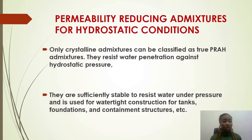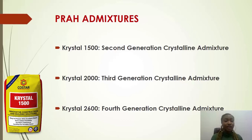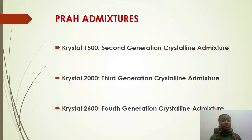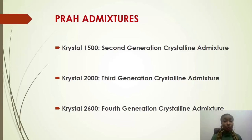Anywhere that you want to cast your concrete and you know the water pressure is high, we recommend you go for crystalline admixture — that is permeability-reducing admixture for hydrostatic conditions. Under this, we have Crystal 1500, Crystal 2000, and Crystal 2600. Crystal 1500 is powder and is referred to as a second generation crystalline admixture. Crystal 2000 is liquid and is a third generation crystalline admixture, while Crystal 2600 is also liquid and is a fourth generation crystalline admixture. In our next training, we will be talking about how crystalline admixtures work and why they give 95% permeability reduction.